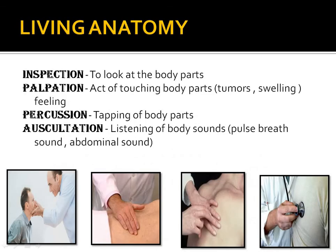Living anatomy means the study of the structure of a living organism. The methods used are inspection, palpation, percussion, and auscultation. Inspection means we look at the body parts — for example, observing failure and stress. Palpation means the act of touching body parts to feel them — for example, palpating tumors or swelling.